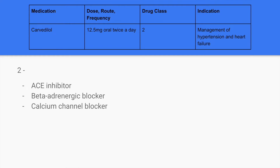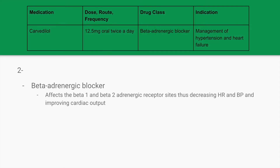Carvedilol is given 12.5mg oral twice a day. It is indicated for the management of hypertension and heart failure. The drug class is beta-adrenergic blocker. Beta-blocker medications end in OL — so metoprolol, esmolol, carvedilol are all beta-blockers. Beta-blockers affect the beta-1 and beta-2 adrenergic receptors, thus decreasing heart rate and blood pressure and helping to improve cardiac output. They're typically indicated for the management of hypertension and heart failure.